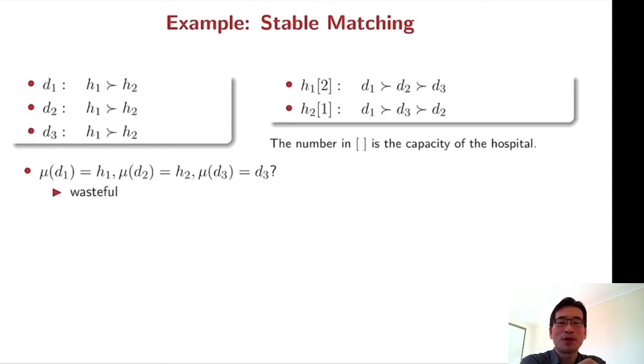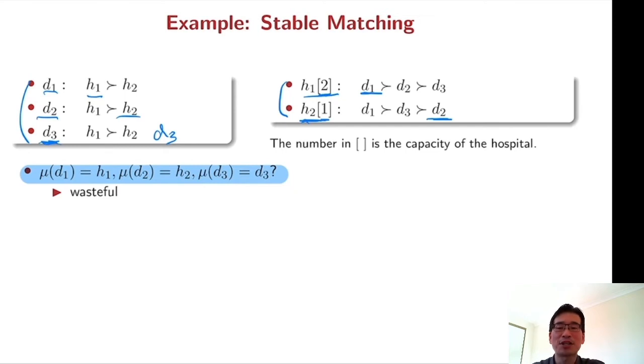So here we have an example. We have three doctors and two hospitals. The capacity of H1 is two and capacity of H2 is one. So consider this particular matching D1 H1 and D2 H2 and D3 D3 means unemployed. But this matching is wasteful because D3 can be hired by H1 and still H1 wants to hire D3 and that satisfies H1's capacity constraint.